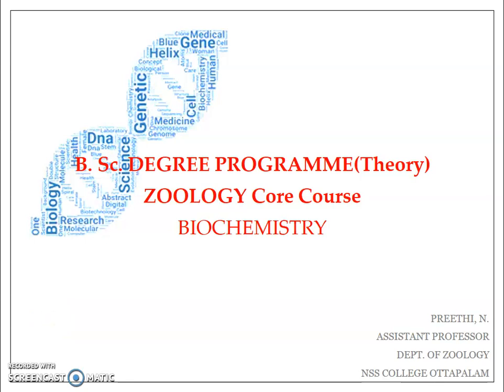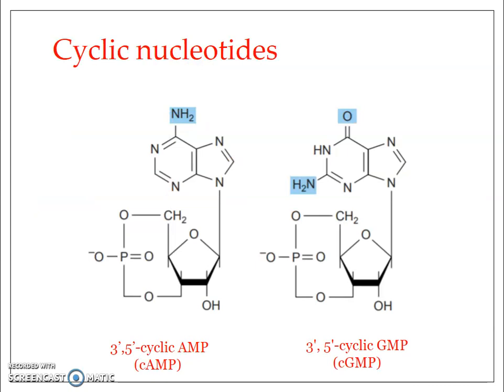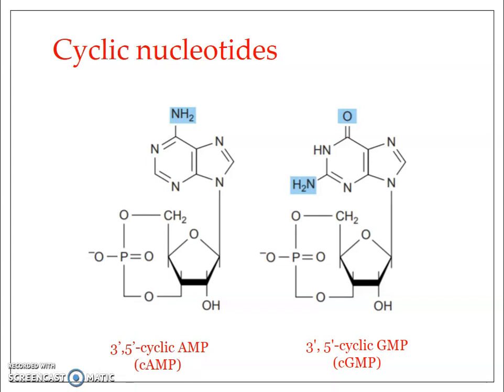Welcome to this session on biochemistry. We'll be looking into the structures of cyclic nucleotides with special reference to cyclic AMP. Cyclic nucleotides are purine nucleotides with a cyclic configuration. These are purine-based nucleotides that are cyclized, referred to as cyclic nucleotides. We have two purines — adenine and guanine — and the adenine-based cyclized nucleotide is known as cyclic adenosine monophosphate.